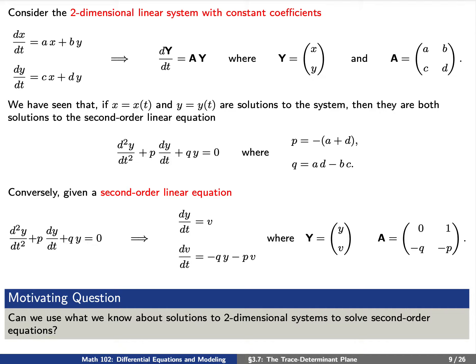Indeed, we can make the substitution capital Y equals (y, v) and our matrix capital A is [0, 1; −q, −p]. We're motivated by the question: can we use what we know about two-dimensional systems to solve second-order equations?